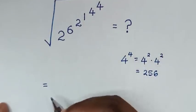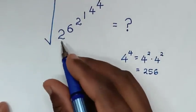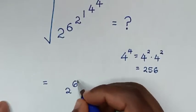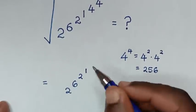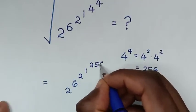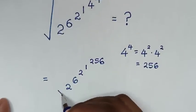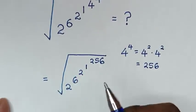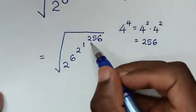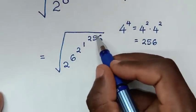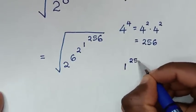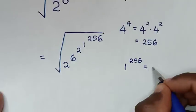So now it will be equal to 2 power of 6 power of 2, then power of 1, and 4 power of 4 is 256 — all of this is under the square root. In the next step we deal with the top power: 1 power of 256. From 1 power of 256 is equal to 1.